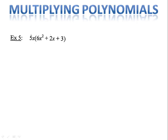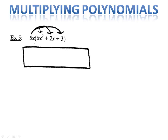Example 5 — we're also using the distributive property. This time we have 3 terms inside the parentheses. We'll begin with 5x times 6x squared, which gives us 30x to the third. Now we'll multiply 5x times 2x and we get 10x squared. Finally we multiply 5x times 3 and we get 15x. So when we expand 5x times 6x squared plus 2x plus 3, we end up with 30x to the third plus 10x squared plus 15x.